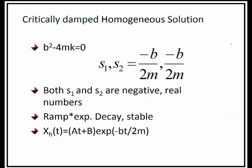If b squared minus 4mk is equal to zero, we call the solution a critically damped homogeneous solution. Both s1 and s2 are negative real numbers but happen to be the same number. The homogeneous solution takes the form of a ramped function — a linear slope, something like (at + b) multiplied by an exponential decaying term. Again, this solution is stable.